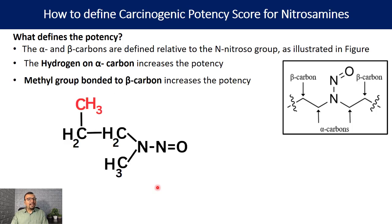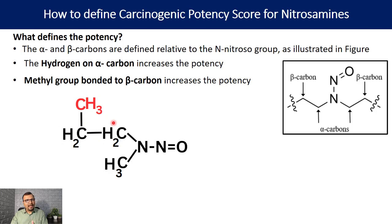Similarly, a methyl group bonded to the beta carbon also increases the potency of the nitrosamine. The beta carbon is one position away from the alpha carbon. If your nitrosamine has a methyl group connected to the beta carbon, the potency increases, meaning it will have a lower acceptable intake value compared to a compound without that methyl group.